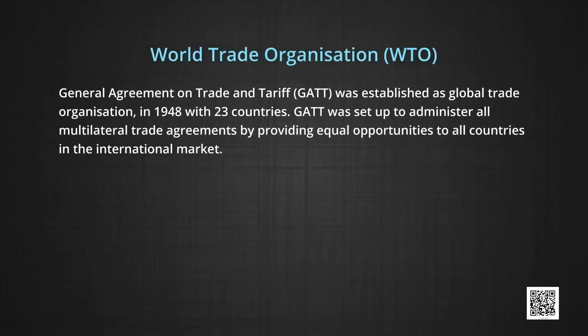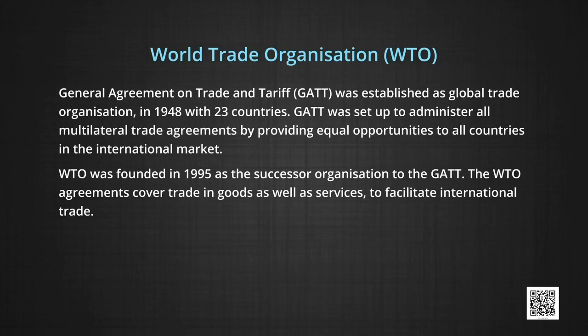Now come to the point on World Trade Organization, particularly known as WTO. The General Agreement on Trade and Tariff — that is, GATT — was established as a global trade organization in 1948 with 23 countries. GATT was set up to administer all multilateral trade agreements by providing equal opportunities to all countries in the international market. WTO was founded in 1995 as the successor organization to GATT. The WTO agreements cover trade in goods as well as services to facilitate international trade.